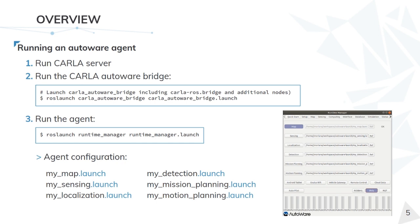Before going into the design details, let's briefly talk about how to run an Autoware agent with Carla. From the Carla side, you need to run the Carla server and the Carla Autoware bridge. The Carla Autoware bridge is already integrated in the Autoware repositories, so when installing the Autoware stack you already have access to it. From the Autoware side, you just need to configure your agent through the different launch files and execute them through the runtime manager provided by Autoware.